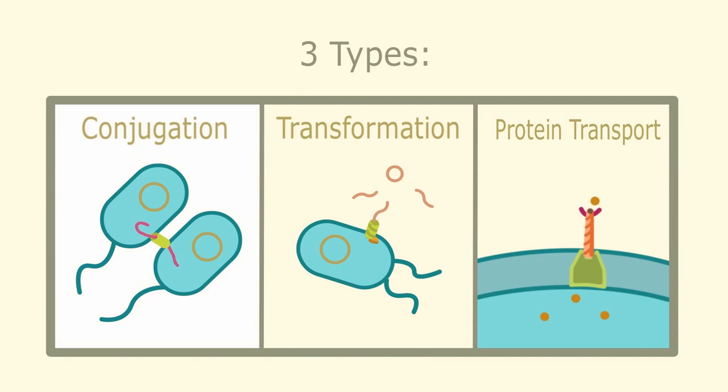Conjugation is the transfer of DNA or genetic material from one bacteria to another, and transformation is the uptake of genetic material from the environment into the bacteria. And then lastly protein transport, it kind of explains itself. It's the transport of proteins from the intracellular space out into either the extracellular space or into another bacteria.